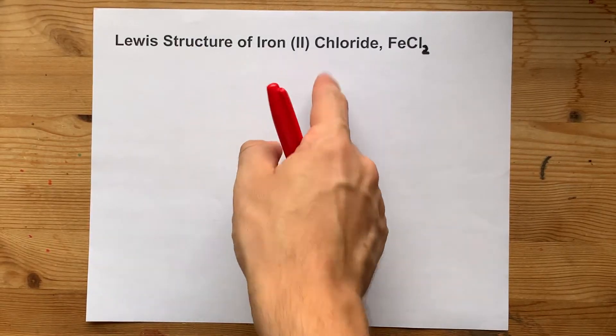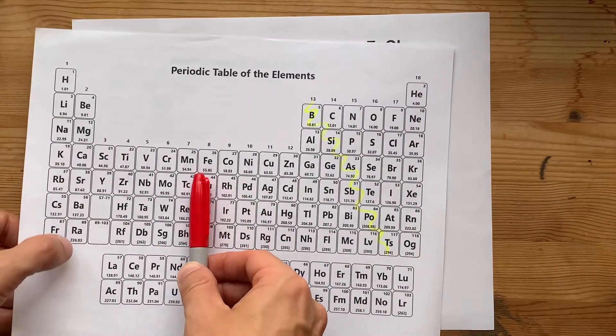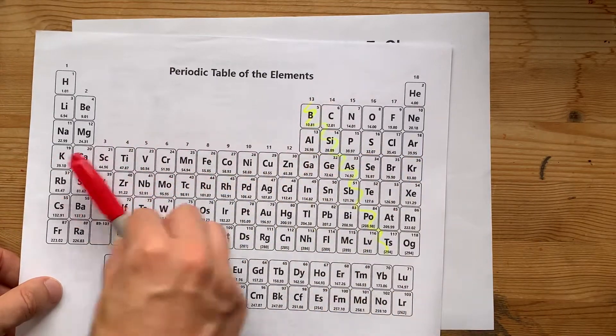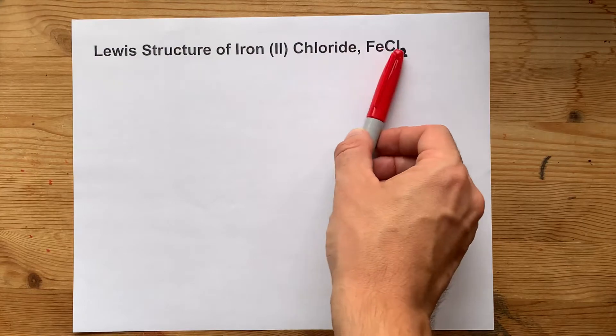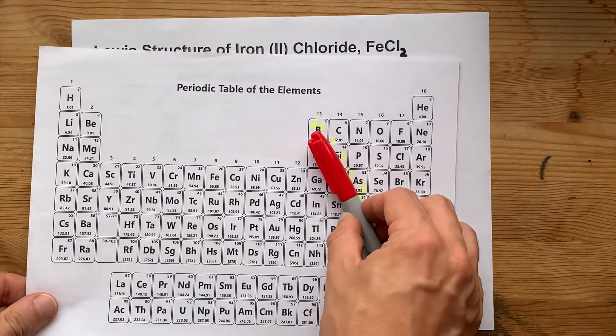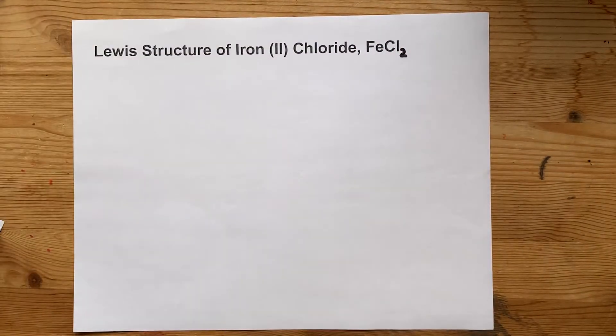The Lewis structure of iron (II) chloride has iron, which is a metal on the left side of this staircase on the periodic table, bonding with chlorine, a non-metal from the right-hand side of the periodic table.